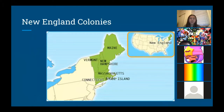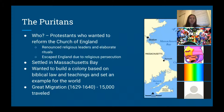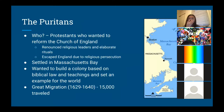Now, the New England Colonies — these include Maine, New Hampshire, Vermont, Massachusetts, Connecticut, and Rhode Island, though we'll focus on Massachusetts, Connecticut, and Rhode Island. The Puritans settled in Massachusetts Bay. They often get confused with the Pilgrims. The Puritans were Protestants who wanted to reform the Church of England. They didn't like how religious leaders had so much control and so many elaborate rituals, so they escaped England due to religious persecution.